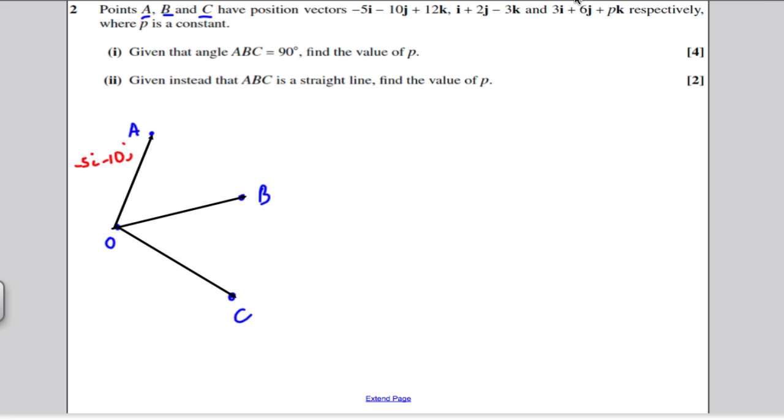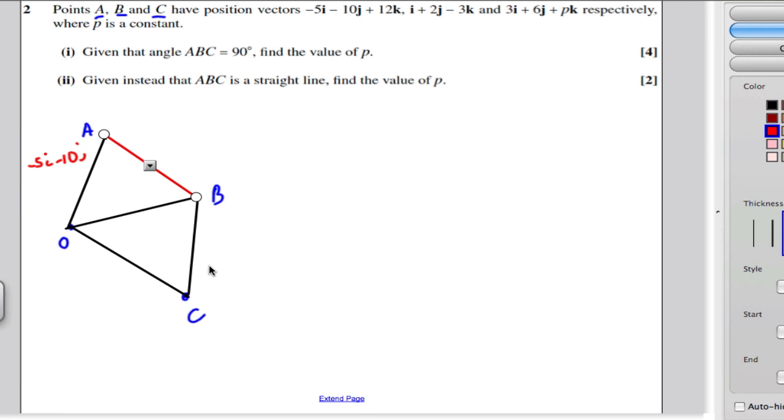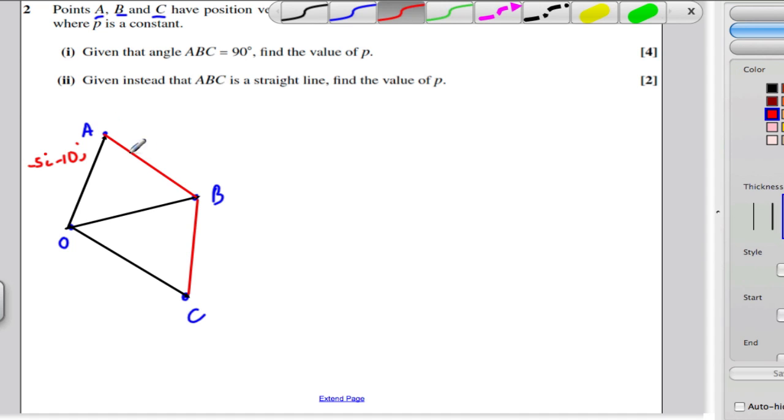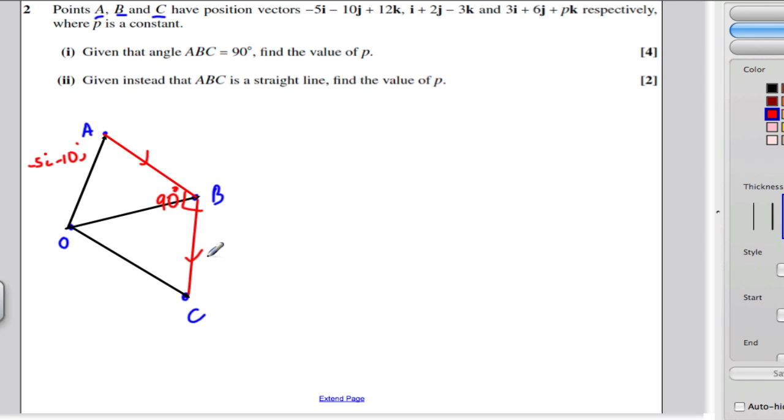Points A, B and C have position vectors - these means with relative to the origin. There's the origin. There is angle A. There is position B and here is position C. So what we've got going on, we've got a vector from O to A given by -5i - 10j.